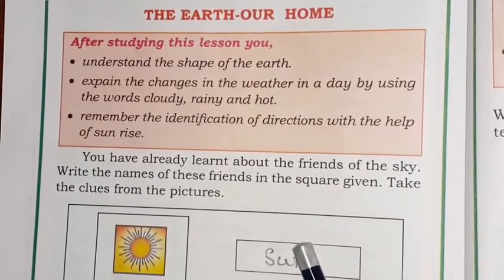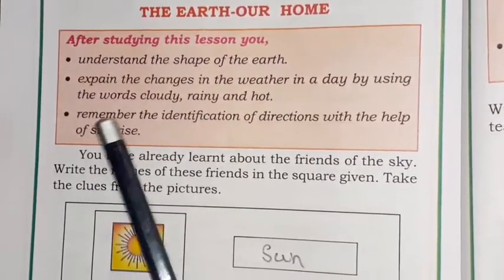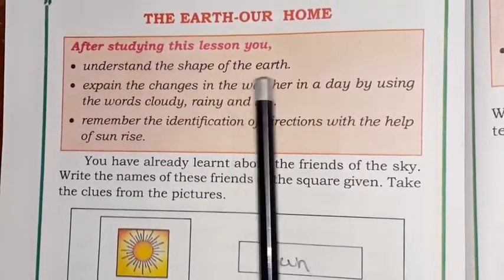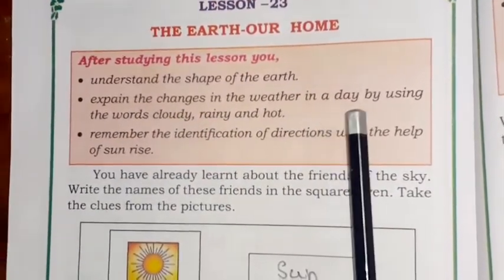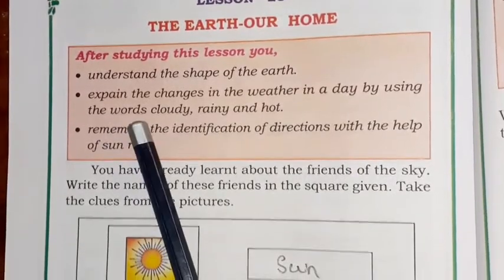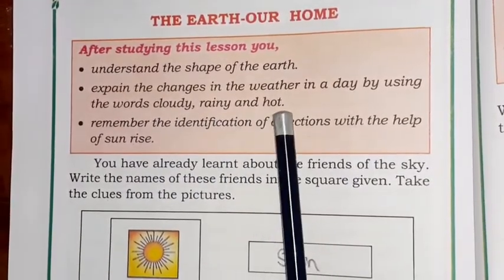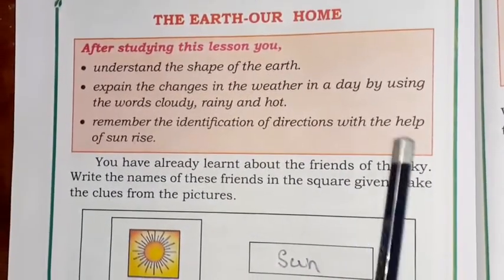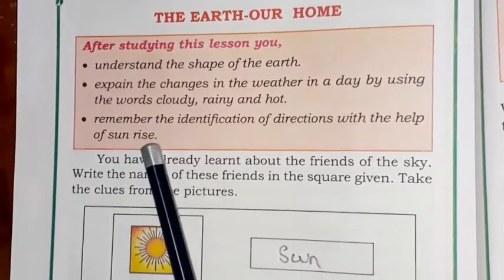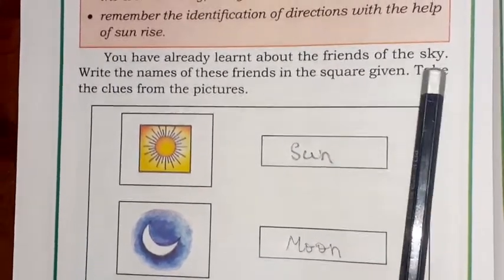This is a big lesson, so we'll do it in two parts. We are going to study how to understand the shape of the earth, explain the change in weather in a day using words like cloudy, rainy, and hot, and remember the identification of directions with the help of the sunrise.